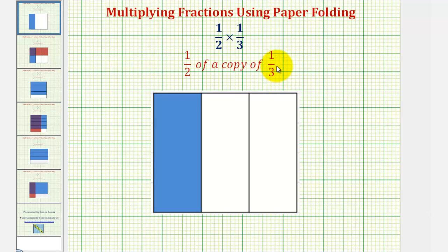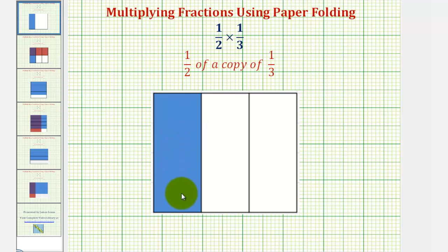So for one-third, we would fold or partition the paper into three equal pieces, done vertically. We would shade one of the three pieces to represent one-third. Now, because we want half of a copy of one-third, we'll now fold a partition of the paper into two equal pieces.